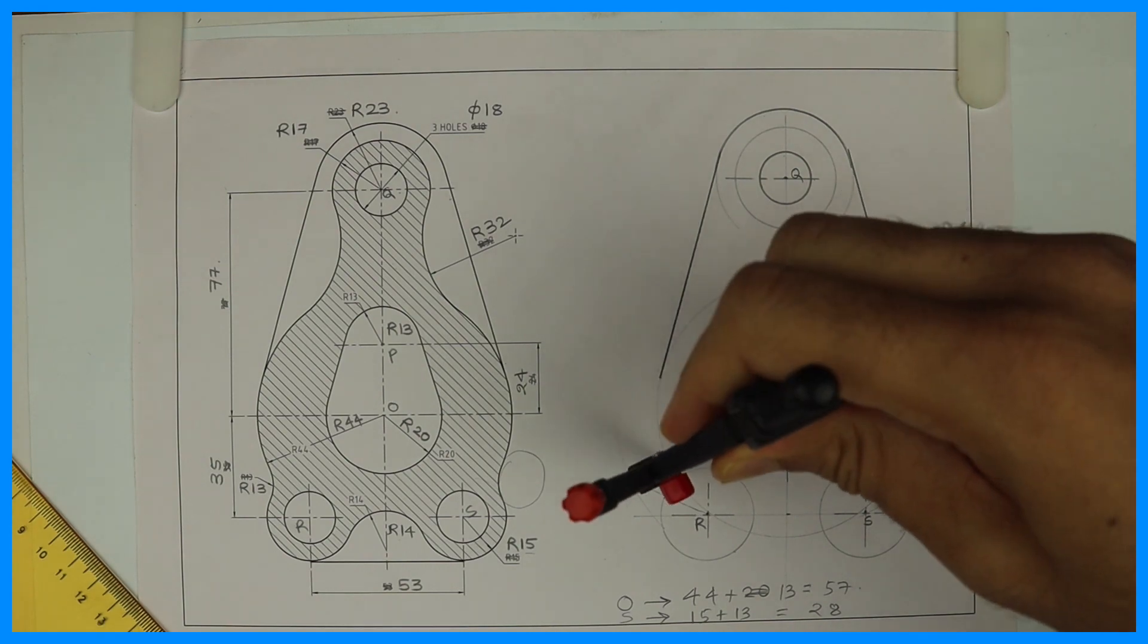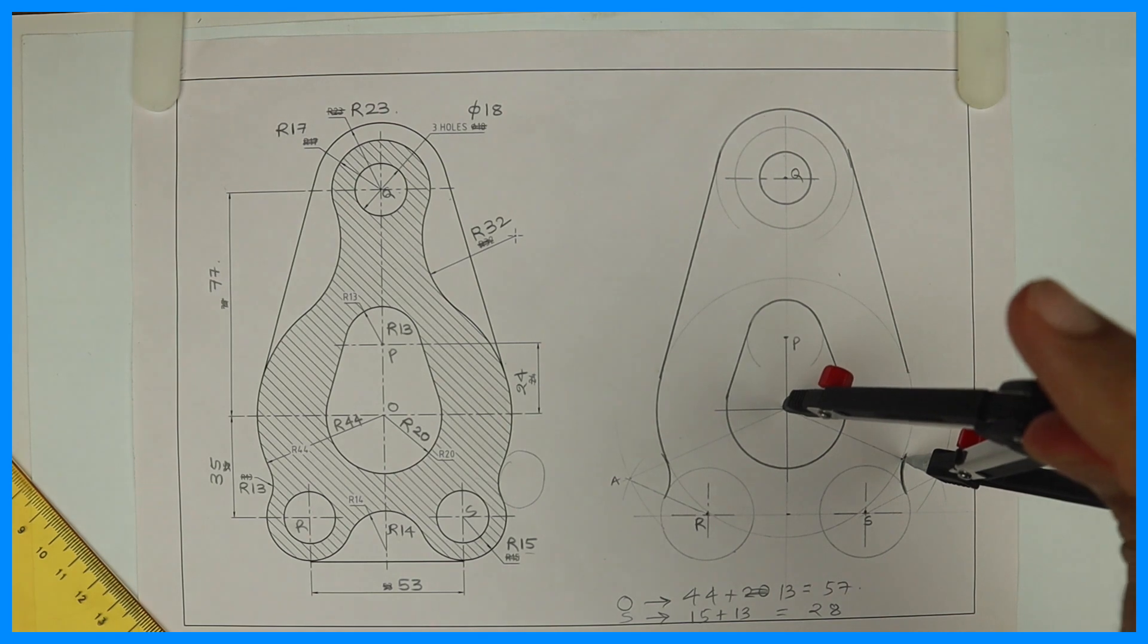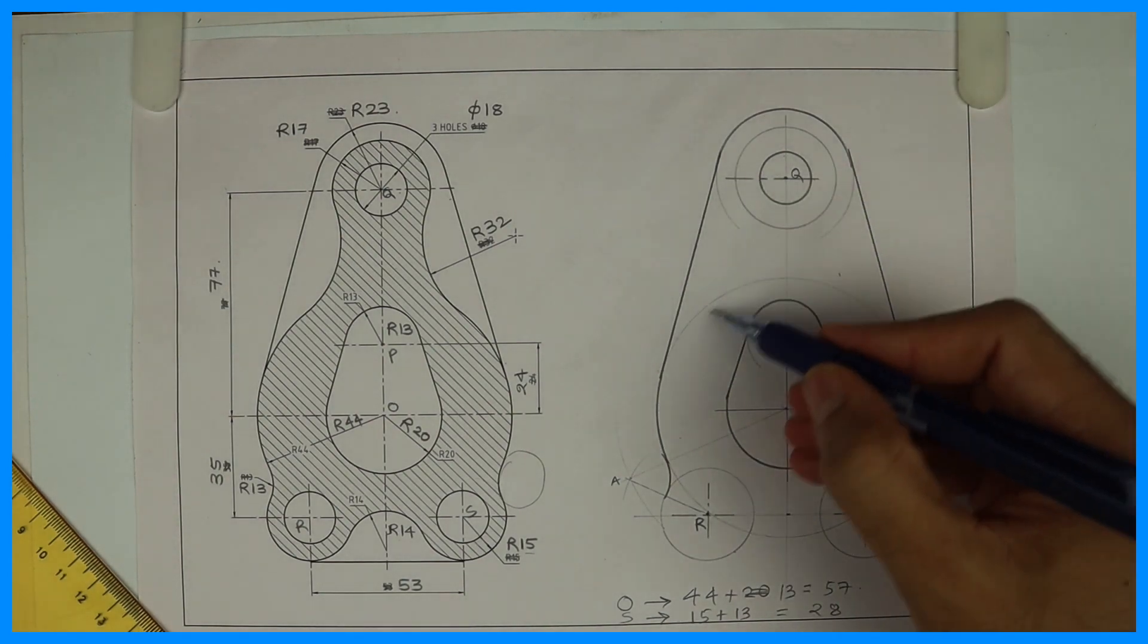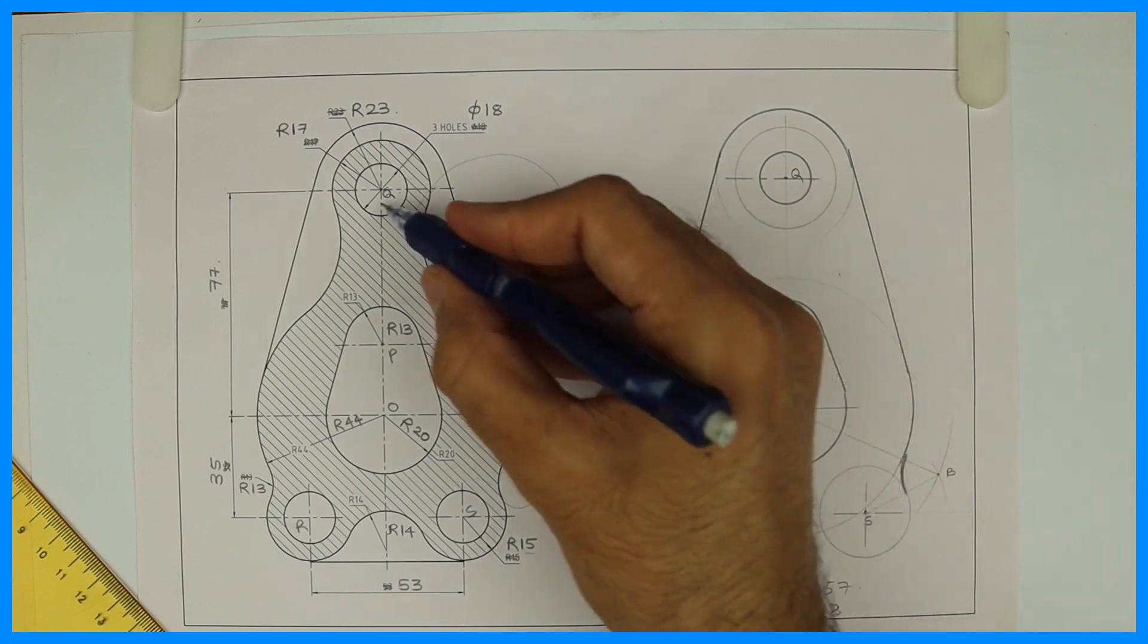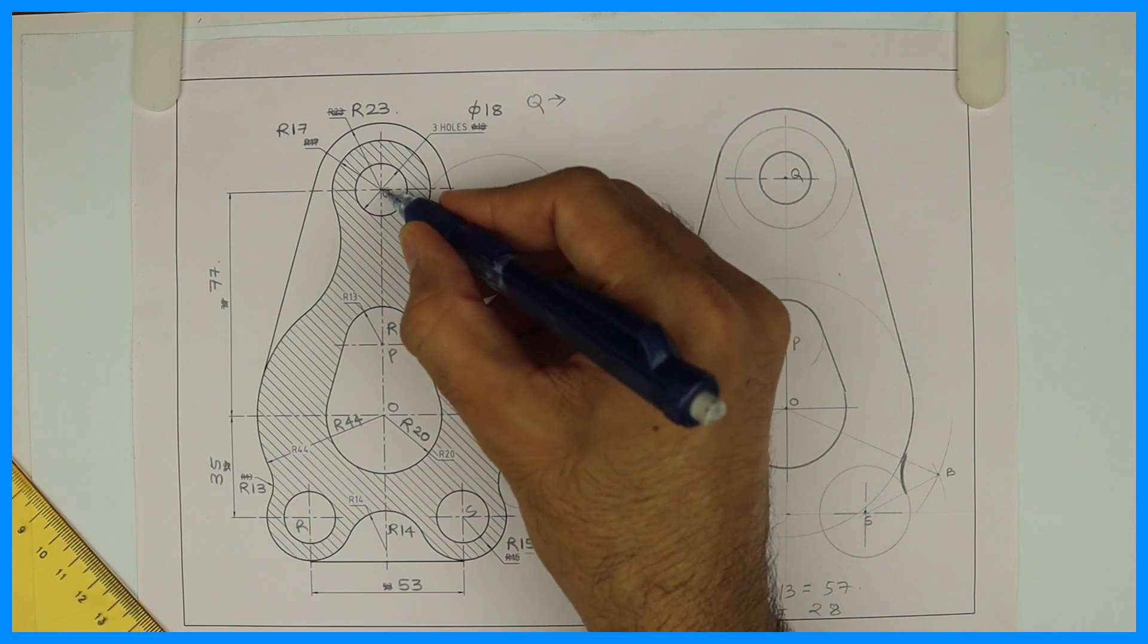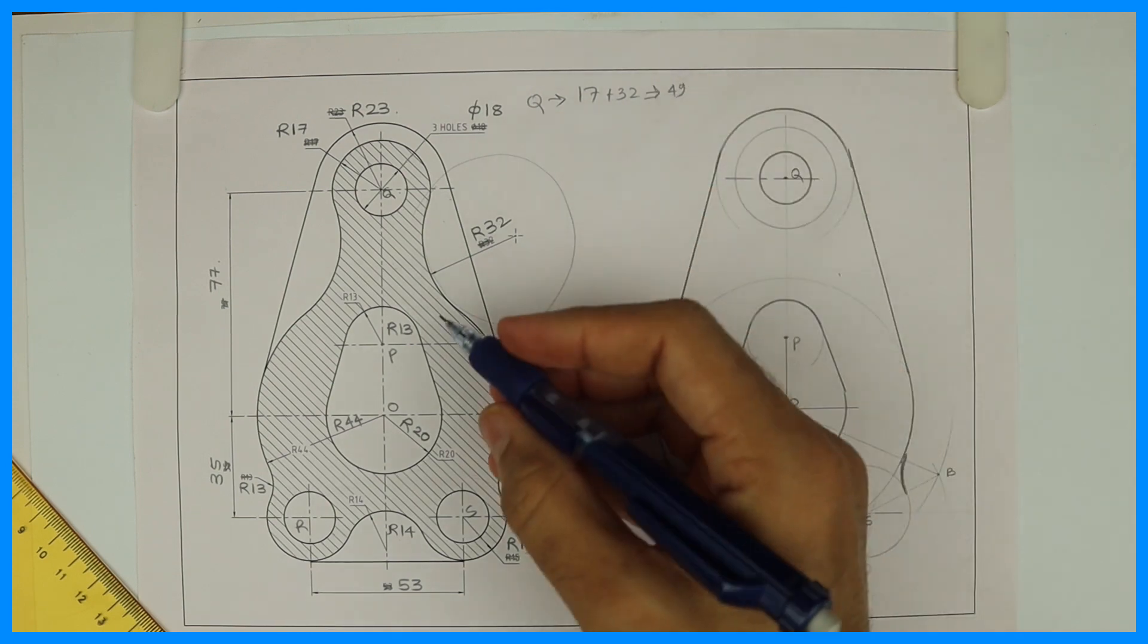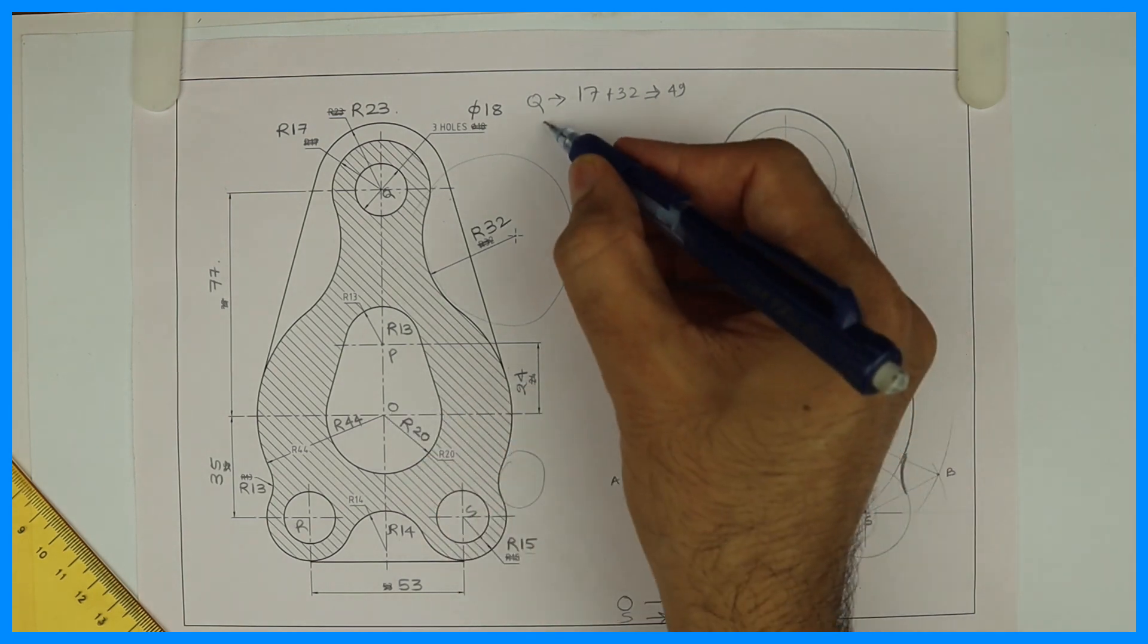Now let's see. From O you draw a circle. This remaining part. Here we need to draw this curve, radius 32. You see radius 32 is again external, so from point Q I will cut 17 plus 32, that is 49.